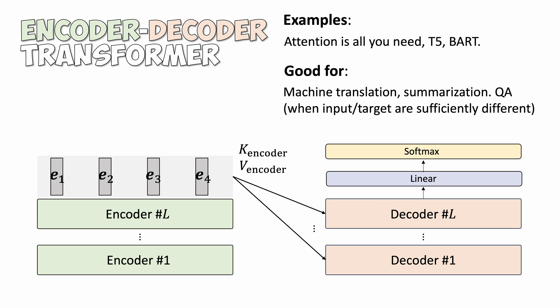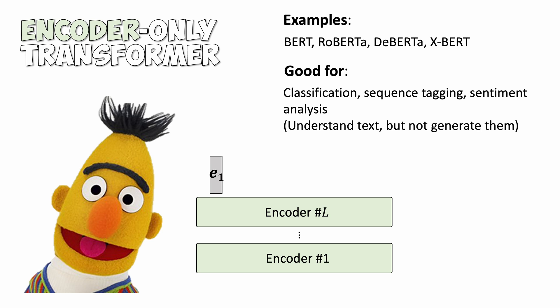We can also use encoder-only models. A representative model family is BERT. These methods are good at understanding the input text and have applications in classification, clustering, sequence tagging, and sentiment analysis. However, it is not designed for text generation.